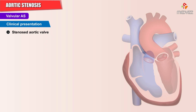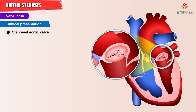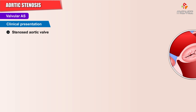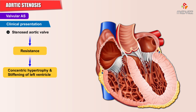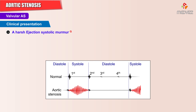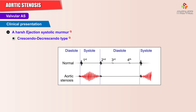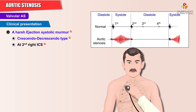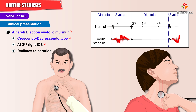The high resistance generated by the stenosed aortic valve causes concentric hypertrophy and stiffening of the left ventricle, resulting in the S4. A harsh ejection systolic murmur which is of crescendo-decrescendo type is particularly noticeable in the second right intercostal space with radiation to the carotids.